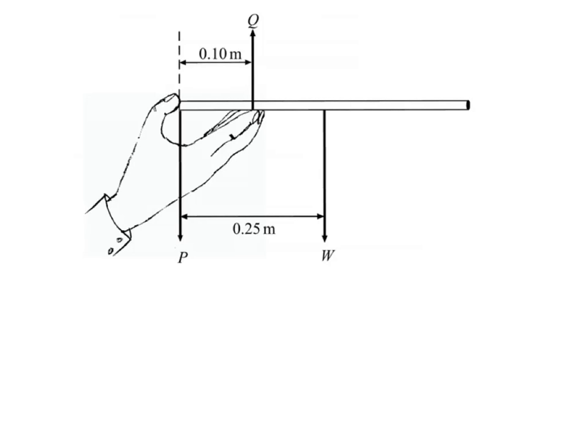So this particular question asked you to find out what P and Q were, so you've got two unknowns in this question.